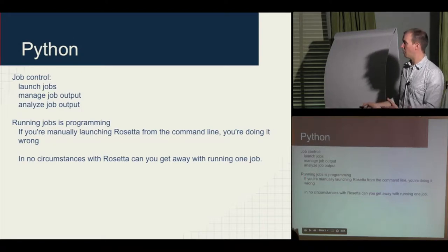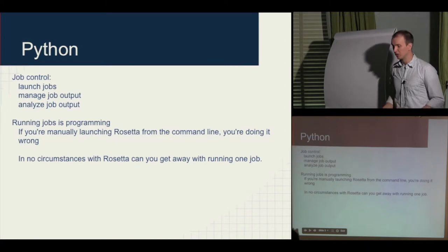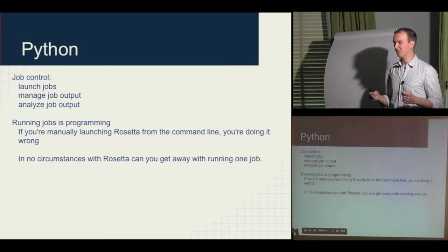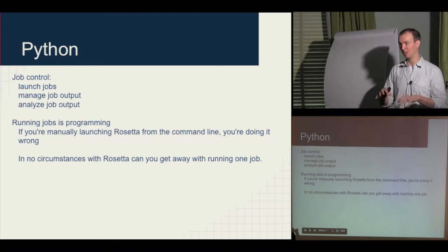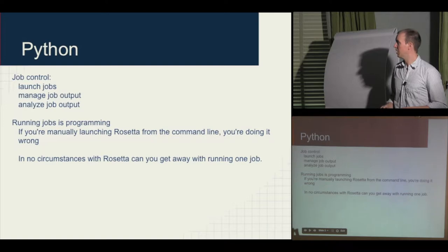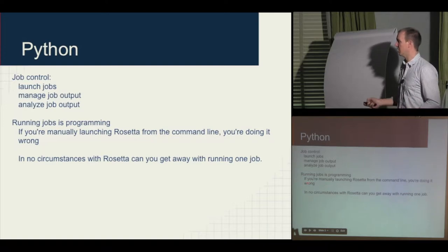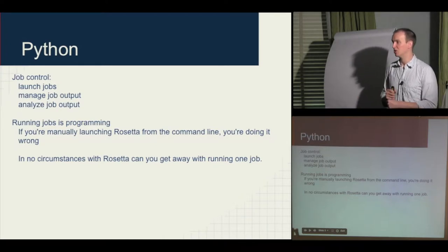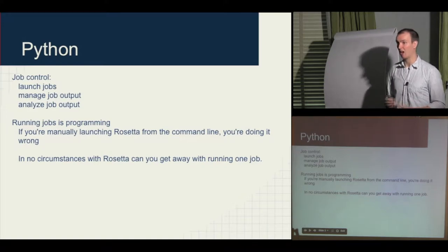I wish I had gotten this advice when I was a graduate student: if you're interested in running jobs, you should think about it as programming. You could sit there and type your bsub command to launch your job, but you're never going to find a case where you launch a job only once. If you're going to do something more than once, you may as well write a program to do it. Especially in Rosetta, you typically run thousands of jobs, and doing that manually on the command line is a bad idea.